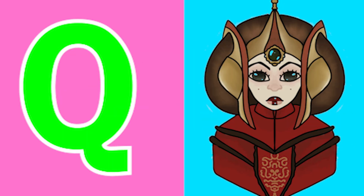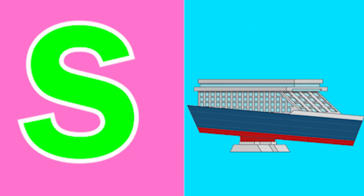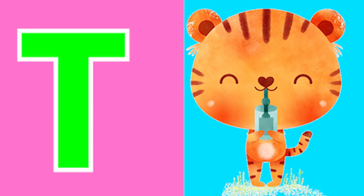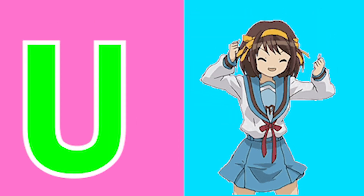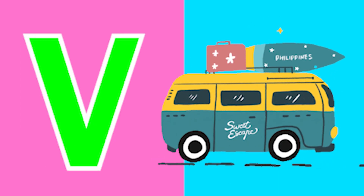Q for queen, R for rat, S for sheep, D for tiger, U for uniform.